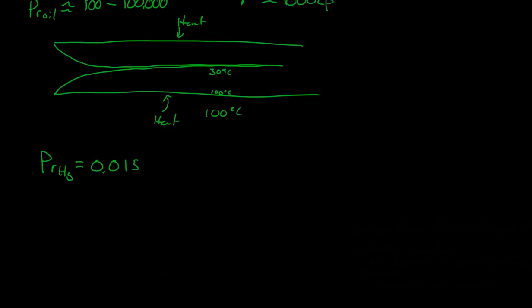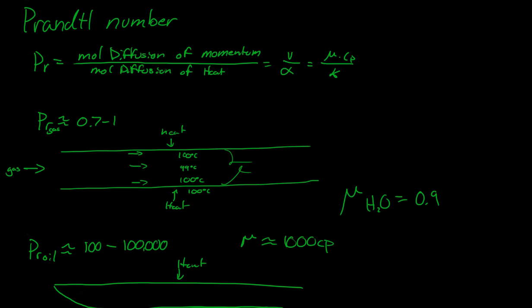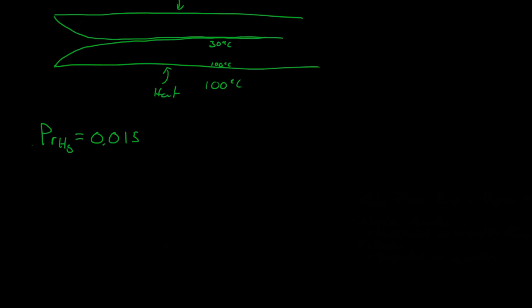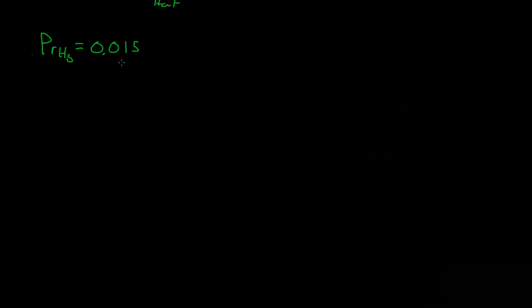So Mercury, it has a viscosity of Hg has a viscosity of about 1.5 centipoise.